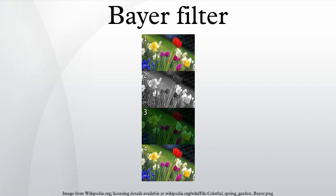The raw output of Bayer filter cameras is referred to as a Bayer pattern image. Since each pixel is filtered to record only one of three colors, the data from each pixel cannot fully specify each of the red, green, and blue values on its own.